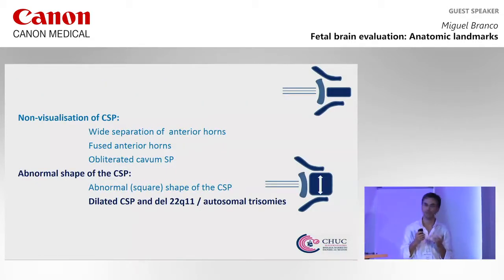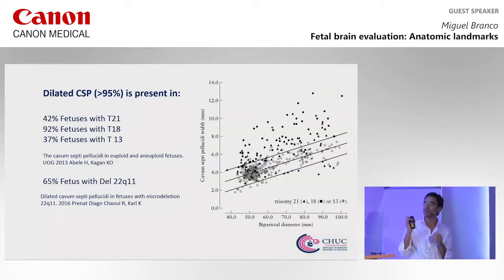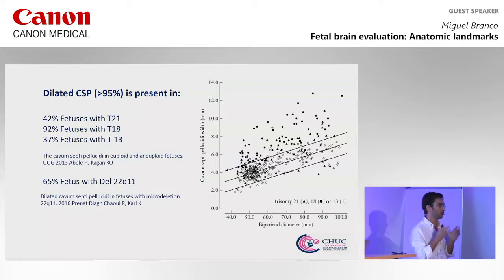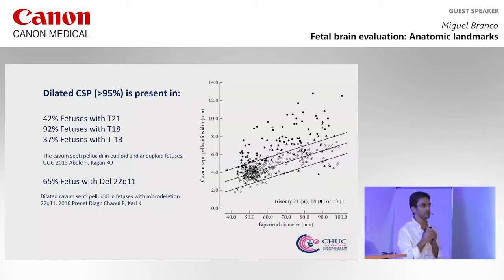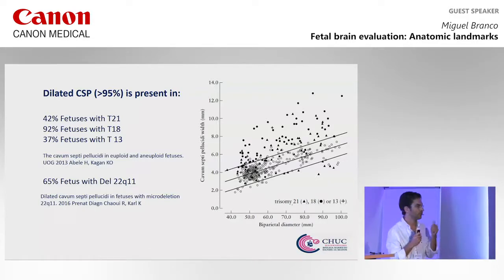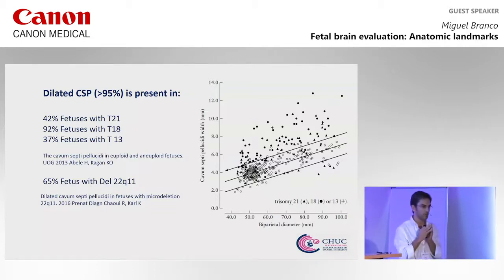Another situation is a dilated CSP, described as width over the 95th percentile. That is associated with an aneuploid fetus. Bear in mind that we don't know how this marker will interact with the other soft markers we already know, and we don't know what is important after the first trimester screening. It is also associated with deletion 22q — this is particularly relevant if you have any conotruncal cardiopathy or hypoplastic thymus in this situation.